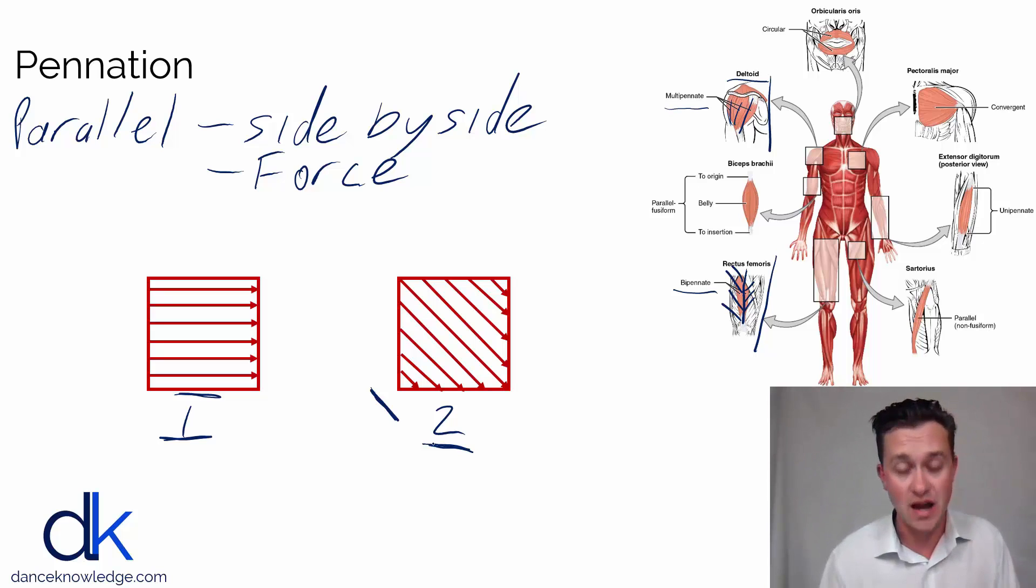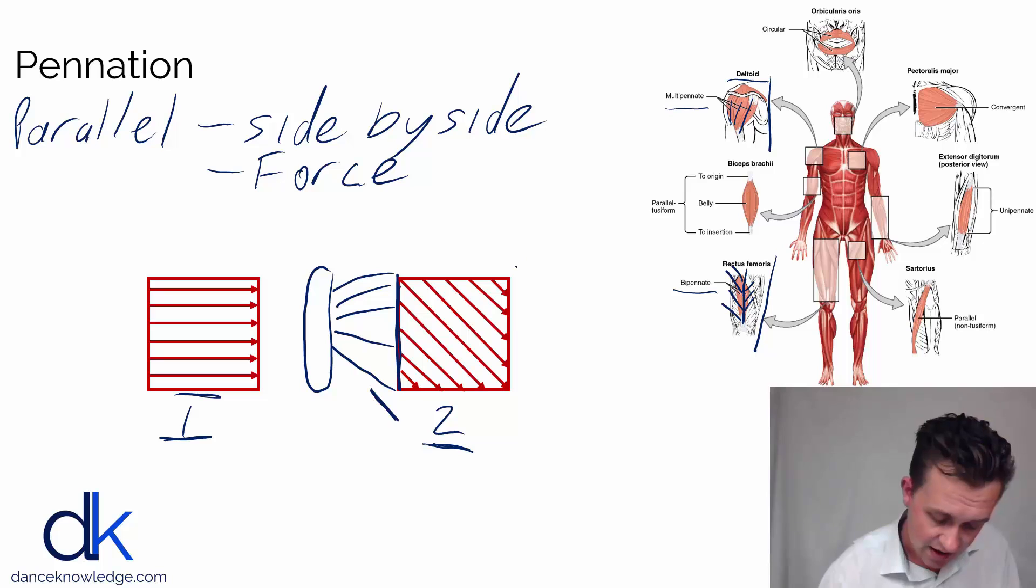And the reason pennation angle is used is if we consider this here to be the musculotendinous junction, so the bit where the muscle connects to tendon and you've got the tendon coming off of the muscle tendon junction here and connecting to a bone, you can see here that the direction of force, this diagonal direction of force that the fibers can pull within, is not the actual direction of force that the muscle itself would pull within. So whereas the fibers are pulling diagonally, the whole muscle itself would pull from left to right.